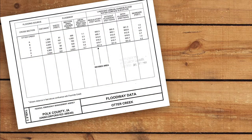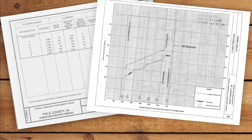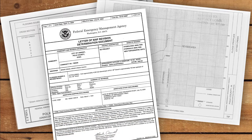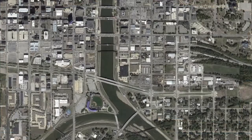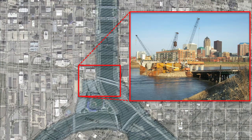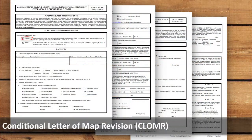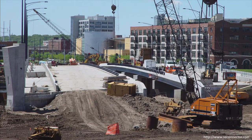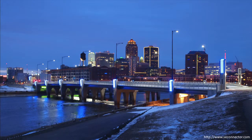For this reason, FEMA provides a process where the technical analysis and documentation for a project can be submitted for review before the project is constructed. If FEMA agrees that the information provided correctly reflects the anticipated effects of the proposed project on the mapped floodplain, base flood elevation, and floodway, it will approve what is called a Conditional Letter of Map Revision, or CLOMR. The project can then be constructed as designed. In order to obtain the final LOMR, the applicant has six months from the completion of the project to provide FEMA with as-built plans showing that the finished project does not differ from the one originally approved by the CLOMR.